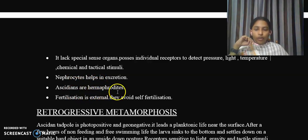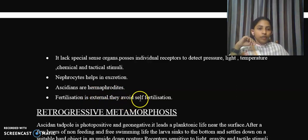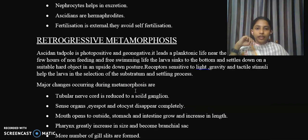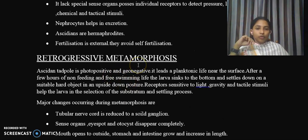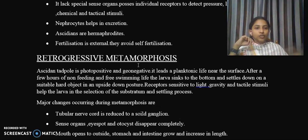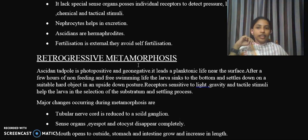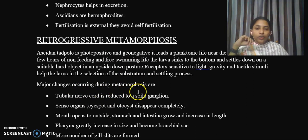Nephrocytes help in excretion — they are specialized cells serving an excretory purpose. Acidians are hermaphrodites, with sexes united. Fertilization is external, and they avoid self-fertilization. Regarding retrogressive metamorphosis: in the larval stage, all advanced chordate characters are present, but when the organism enters the adult stage, these advanced chordate characters are lost. Such a process is called retrogressive metamorphosis.